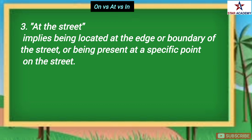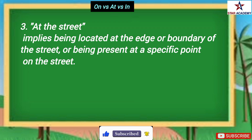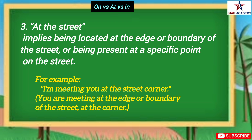When someone says 'at the street', it implies being located at the edge or boundary of the street, or being present at a specific point on the street. For example, 'I am meeting you at the street corner' means you are meeting me at the edge or boundary of the street, at the corner.